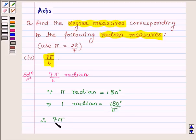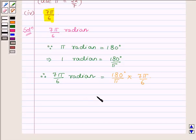7π/6 radian will be equal to 180 degrees upon π into 7π/6 radian, which is further equal to π cancels out with π and 6 into 30 is 180 degrees.